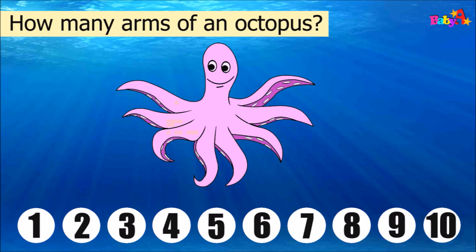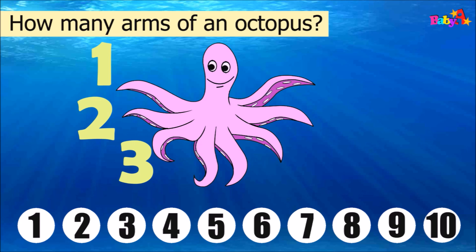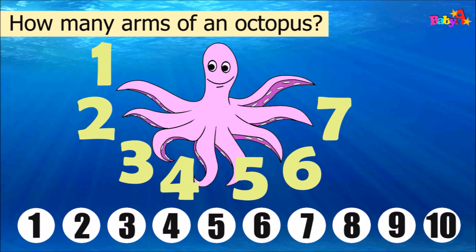How many arms of an octopus? 1, 2, 3, 4, 5, 6, 7, 8. Octopus has eight arms.